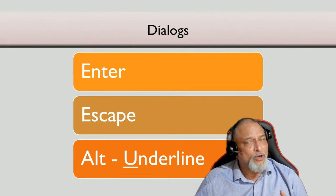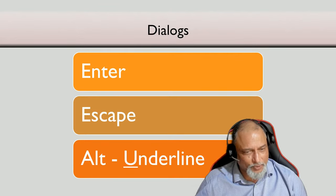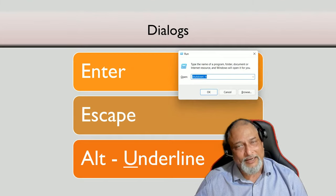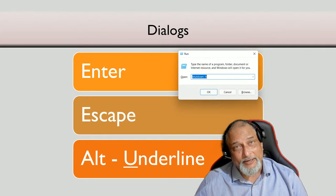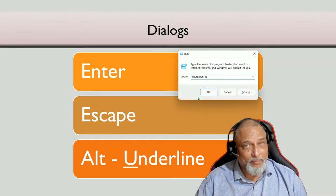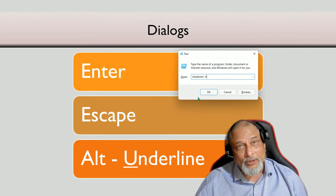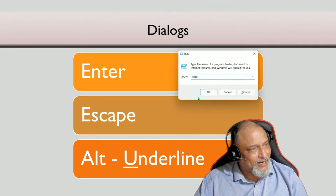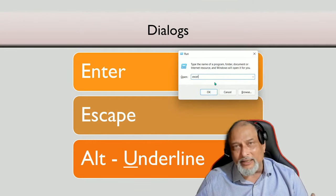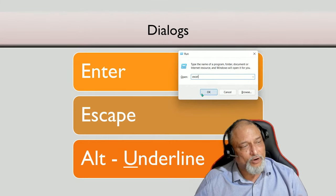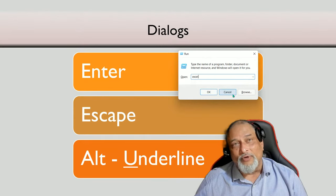Now before we go ahead, we have to understand some very commonly required keyboard shortcuts. Let's start with something called dialogs. This is the simplest possible dialog — a file run dialog. Now, one of the buttons has a darker border. That button — OK — is the most commonly used button. Many people type something and then take the trouble to click OK with the mouse, but that's not required. The darker-border button is pressed by typing the Enter key, so Enter is the shortcut for the default button, and Escape is the key for Cancel.